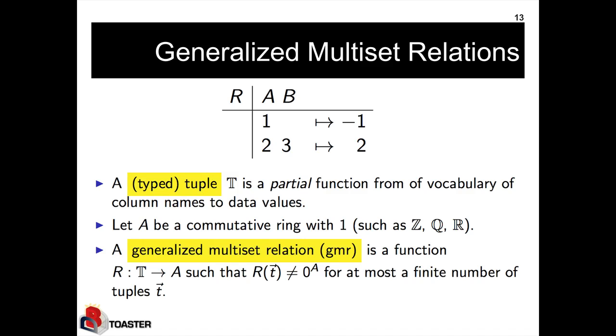We will talk of generalized multiset relations, which are functions from typed tuples to multiplicities. And these multiplicities will come from a domain that is a commutative ring, such as the integers. So we think of these GMRs as functions mapping tuples to multiplicities. And conceptually, they are defined on all possible tuples, that's an infinite set of tuples. But we will require that these functions map to non-zero values only in a finite number of tuples. So we can always tabularize and store such relations by just storing the non-zero tuples with their multiplicities.